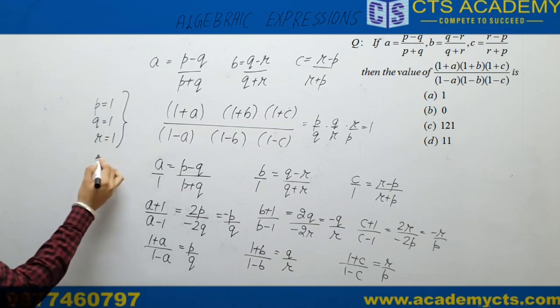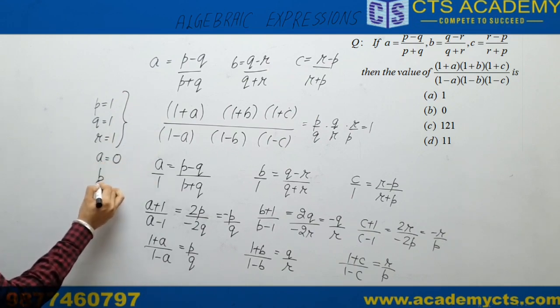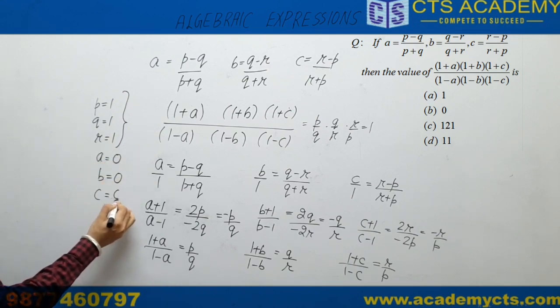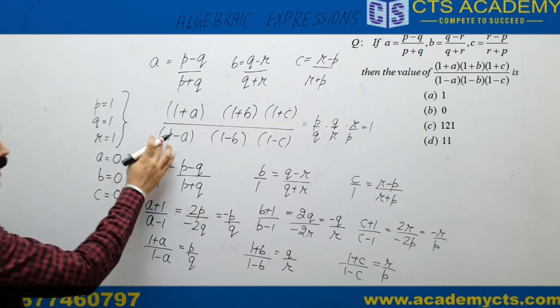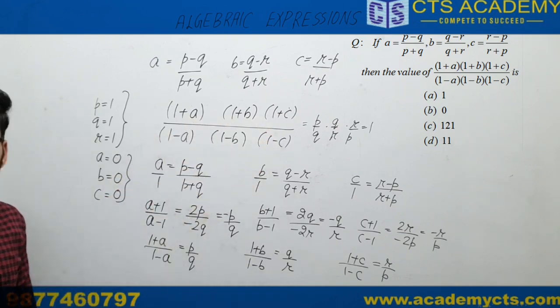If P, Q, R are all 1, we get A = 0, B = 0, and C = 0. So what does this expression become? If we put A, B, C = 0, this expression becomes 1.